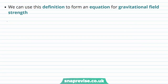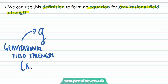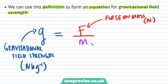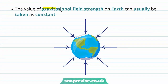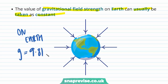We can now use this definition to form an equation for gravitational field strength, which we call g. The gravitational field strength g has units of newtons per kilogram and is equal to the force on a mass F, which is measured in newtons, divided by the mass. The value of the gravitational field strength on Earth can usually be taken as constant. On Earth, we say that the value of g is equal to 9.81 newtons per kilogram.